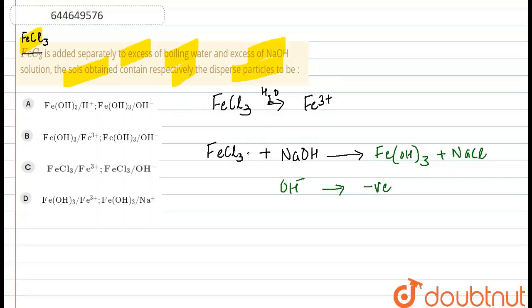So we are getting a positively charged solution in first case and negatively charged solution in second case. So which option will be correct here? That option will be correct where Fe3+ and OH- is getting formed. So option number B here, out of the following options, is the correct option. So this is our answer to the question.